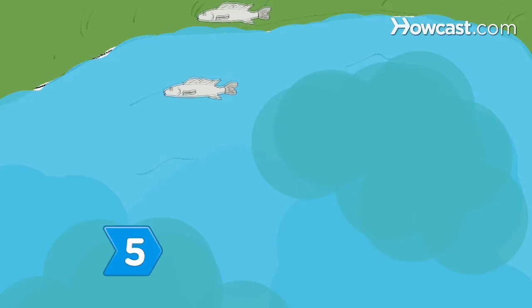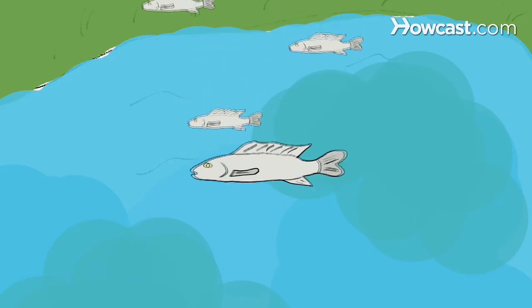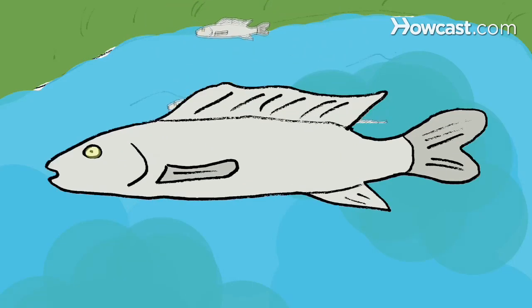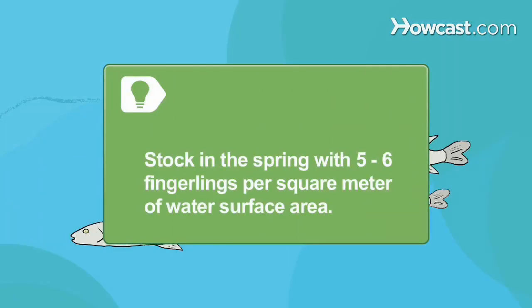Step 5. Stock the pond with fingerlings or young fish. Tilapia is a tasty fish that is easy to raise, and they tolerate a wide variety of environmental conditions. It's recommended that a fish pond be stocked with 5 to 6 fingerlings per square meter of surface area. Spring is the best time of year to stock.